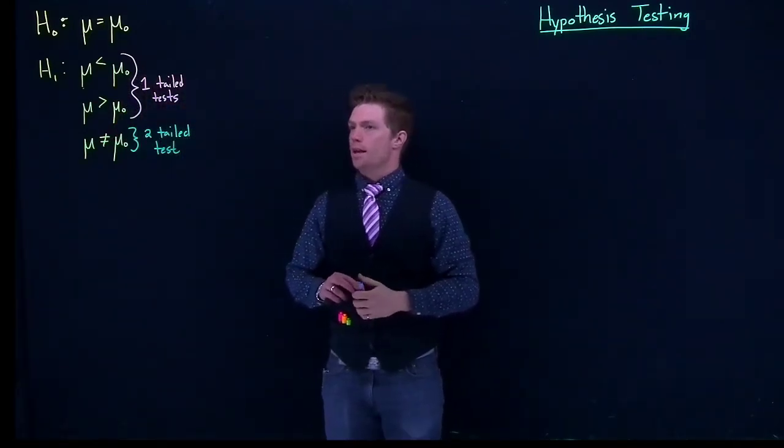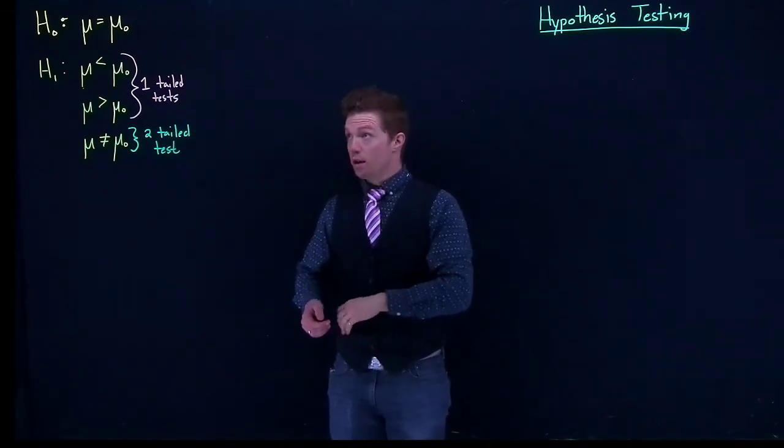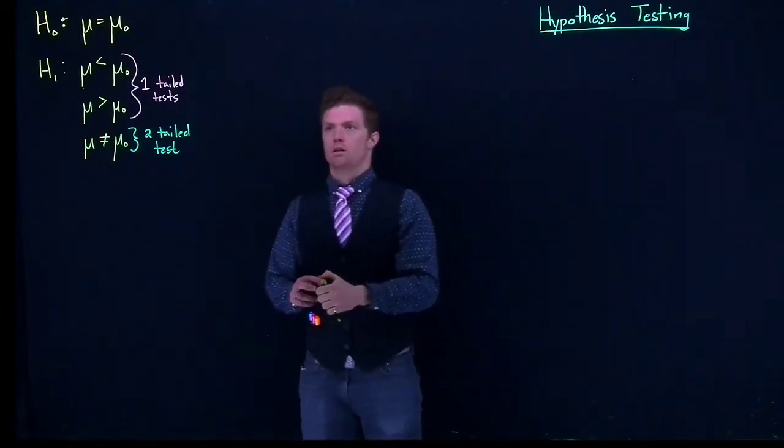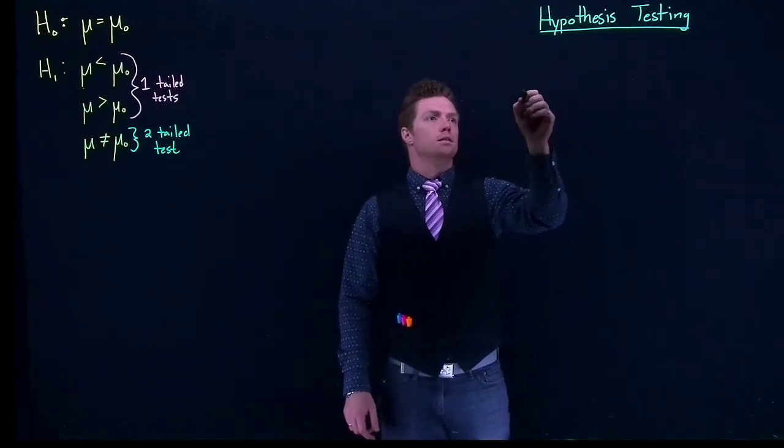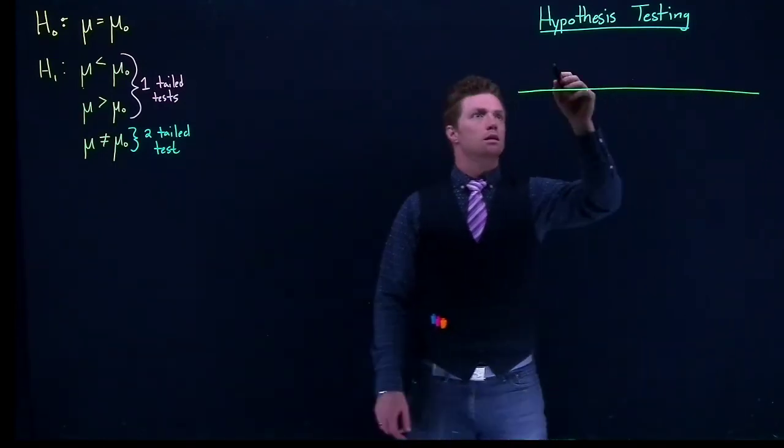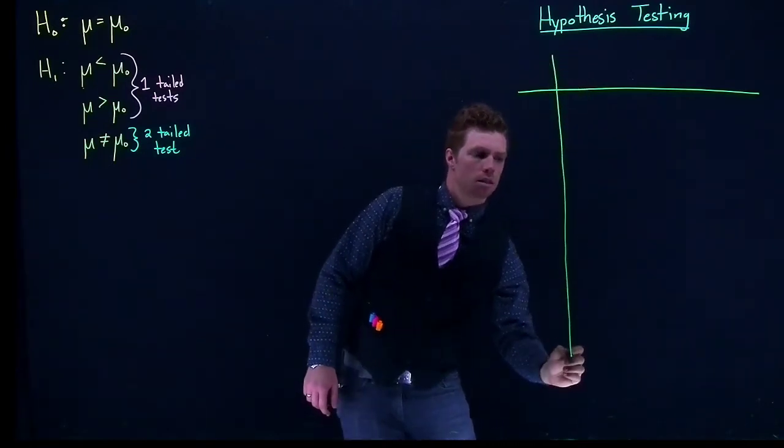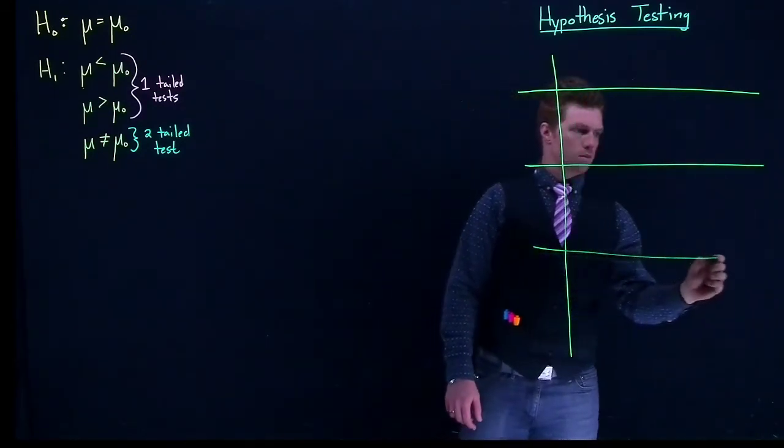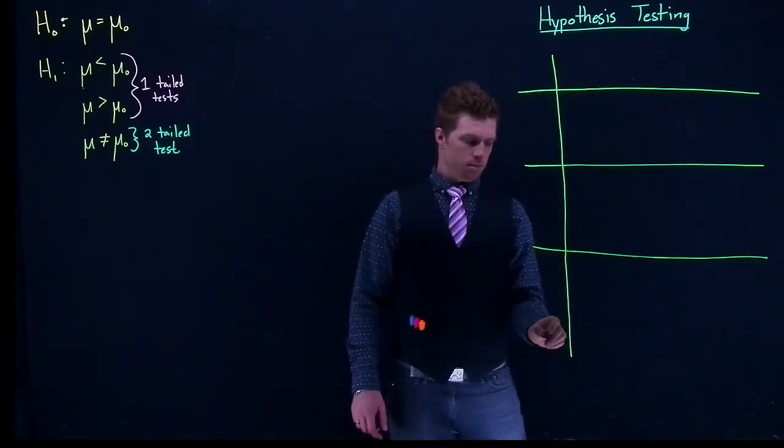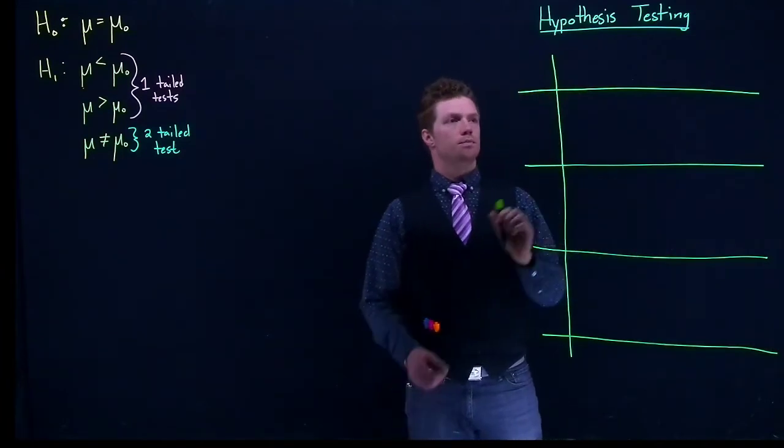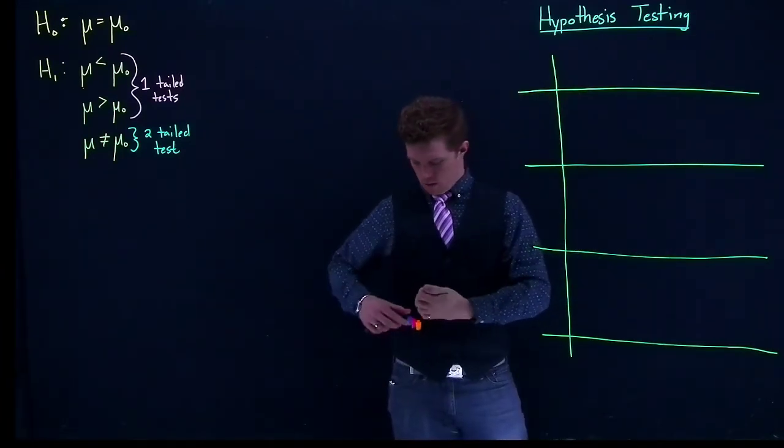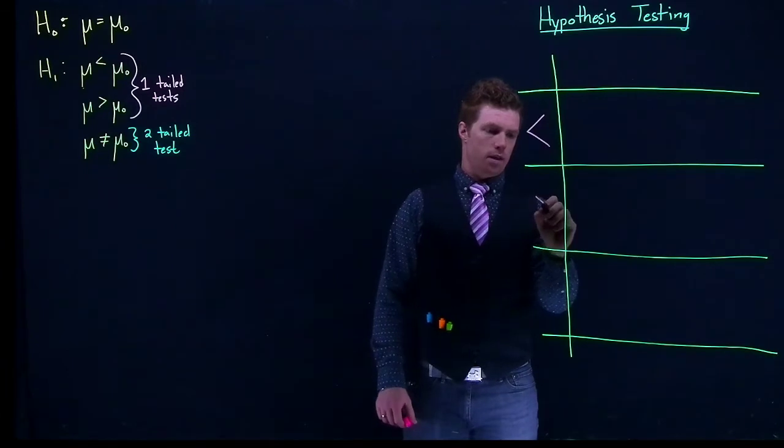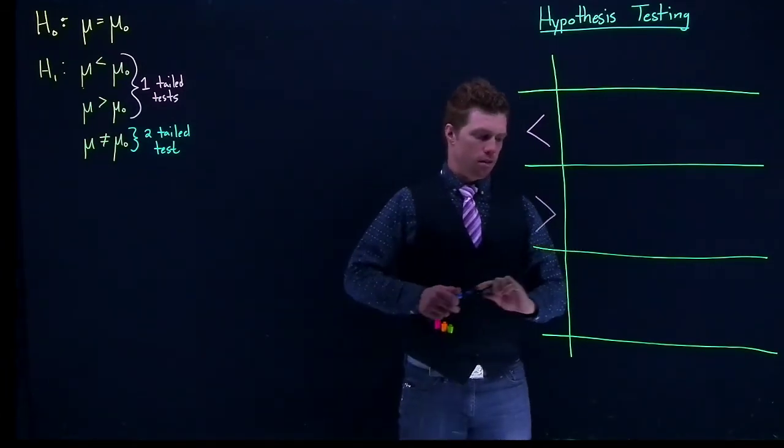Okay, so let's go ahead and make it a little bit of a grid, so we can see what exactly the rejection criteria would look like in every single one of these situations. So let's come over here. We've got a less than, we have a greater than, and we have not equal to.